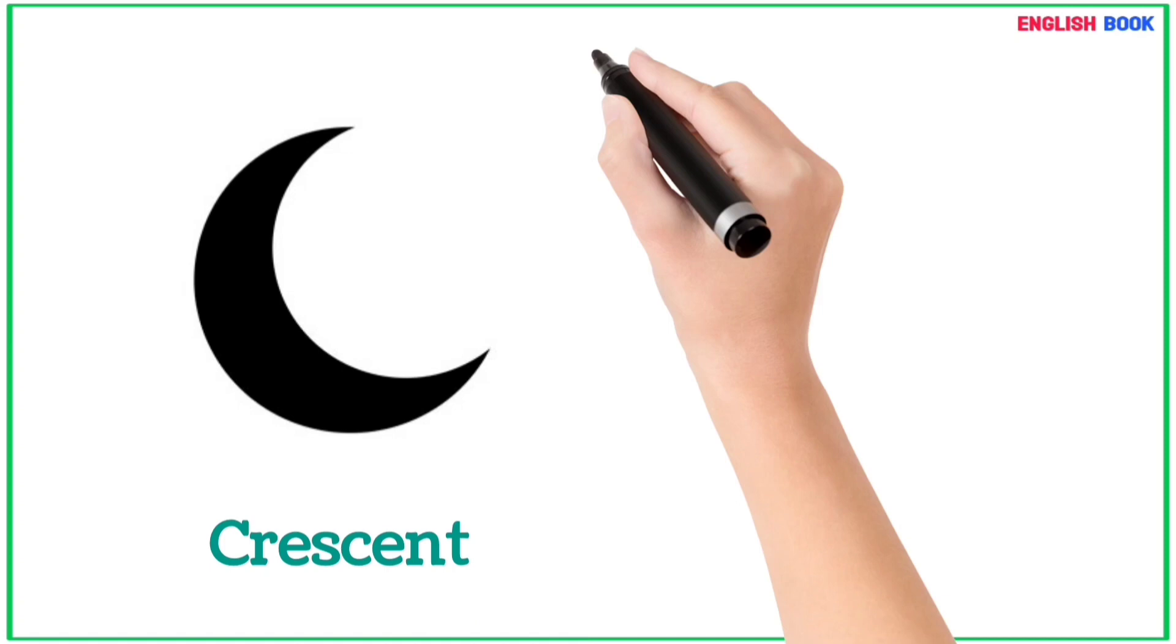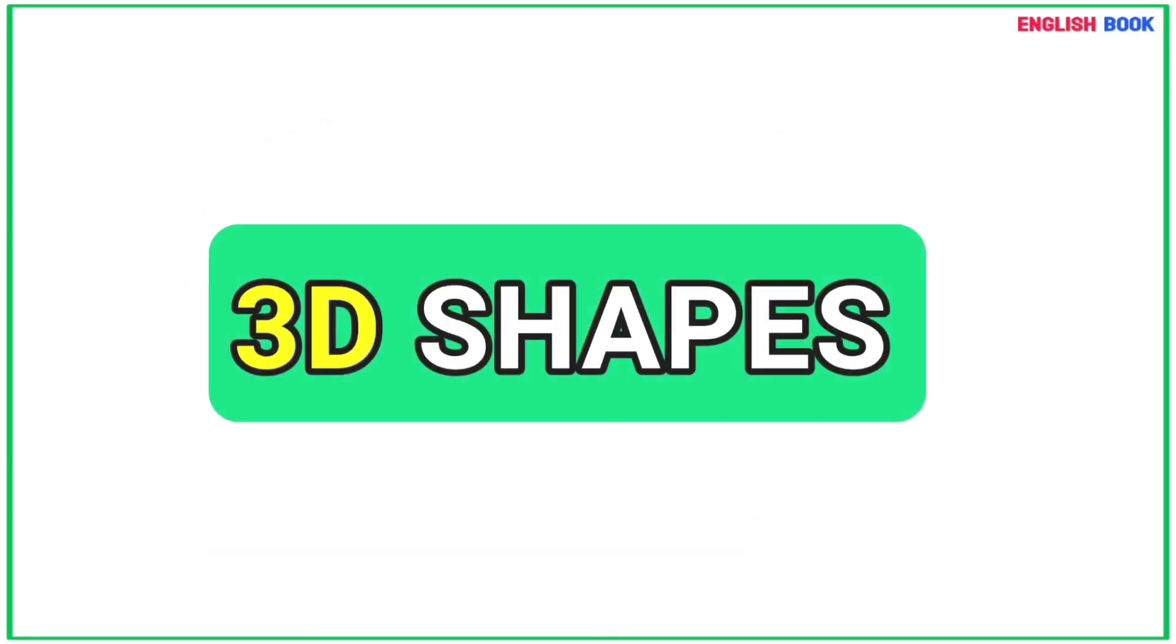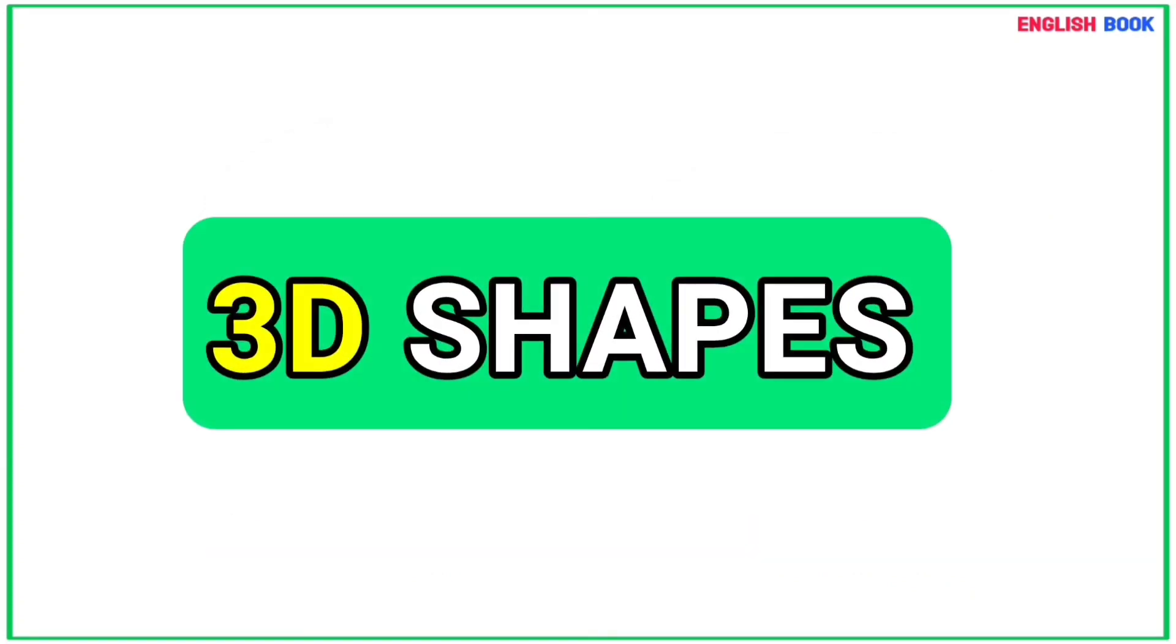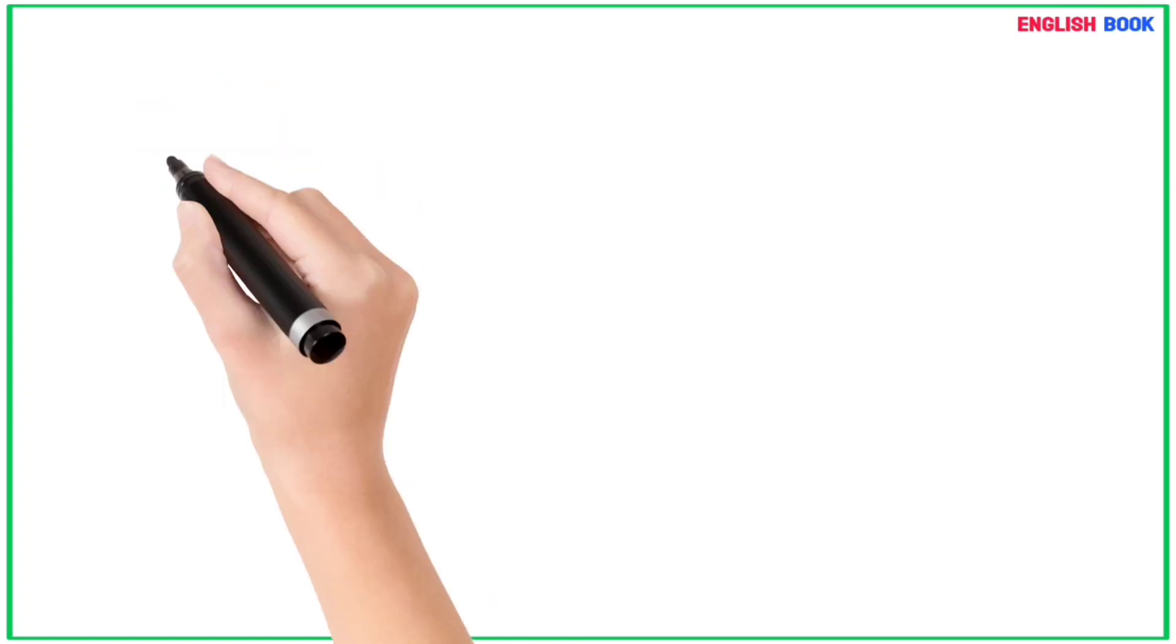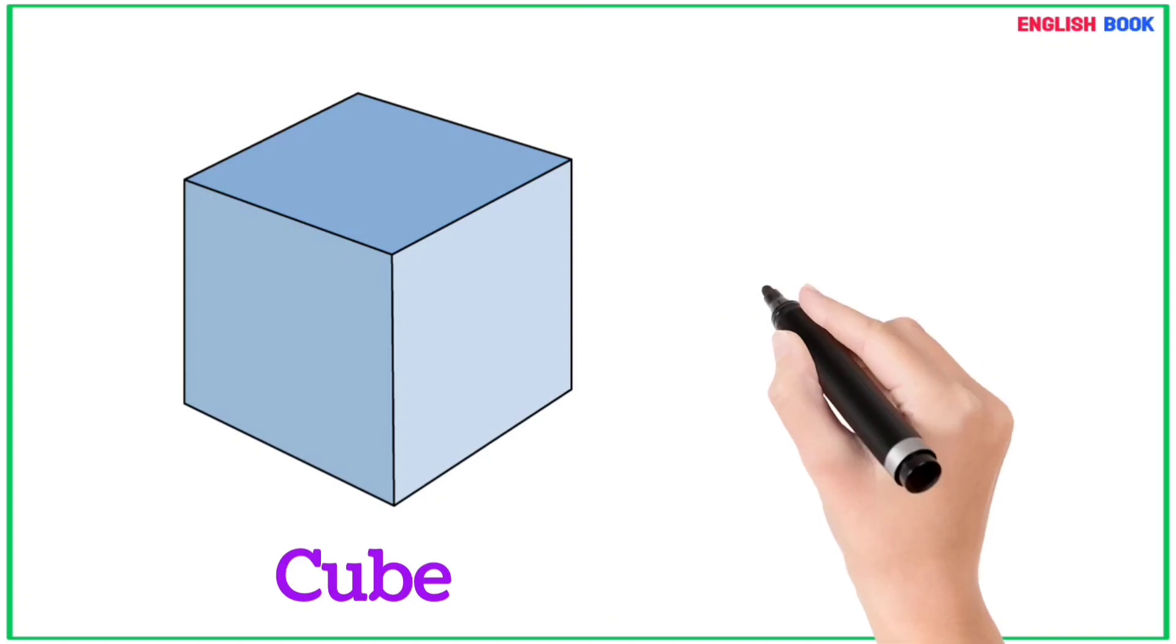Crescent. 3D shapes: Cube - dice is a cube shape object.